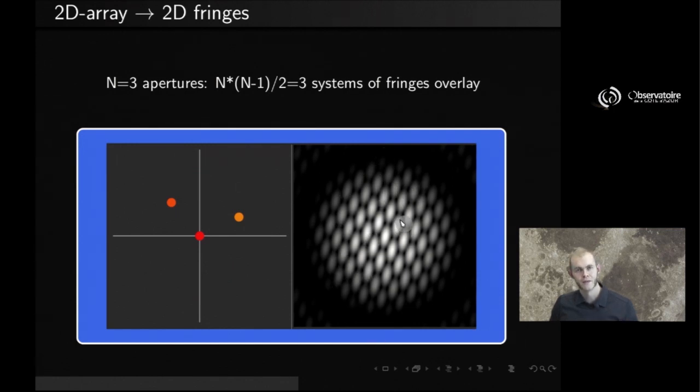Now, if you co-add the electric fields of all three and take the intensity, you get this picture here, something that looks like some kind of honeycomb structure. But just like in the 1D case, although the interpretation of this image is not trivial, via the Fourier transform you're going to be able to easily isolate the different baselines and measure the strength of the signal associated to each of these baselines.